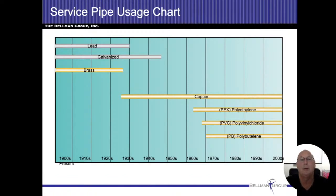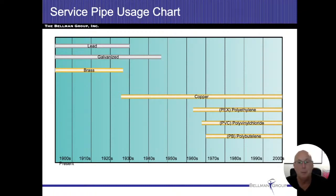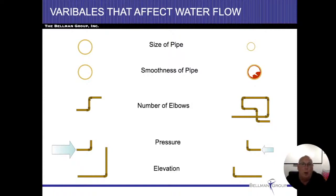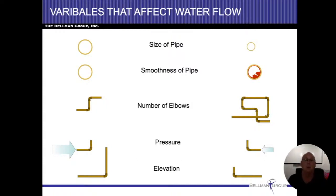Most of the stuff we have in the Chicago area is going to be copper service feeds. Well systems will either be cross-stitch polyethylene or PVC — we classify all three as plastic anyway. Going back to water flow, that's going to be our biggest issue. The bigger the pipe, the more water it's going to flow and the less friction loss. The interior smoothness of the pipe is going to create friction loss. Multiple bends in the pipe are going to create friction loss and lower the flow, and depending on how much pressure is coming through the pipe, that's going to create a high or low flow.